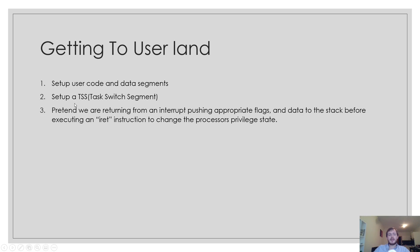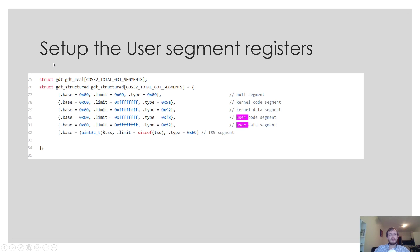We need to change how we load our kernel segment and data segment — currently it's done in the bootloader. Ideally, we want a C function where we can specify segment details and it will populate the real structure with the bits laid out as required by the processor, for both kernel and user code and data segments. You'll also notice the TSS segment. The TSS stands for task switch segment, and its purpose is to hold information such as the kernel stack pointer and the kernel stack segment.